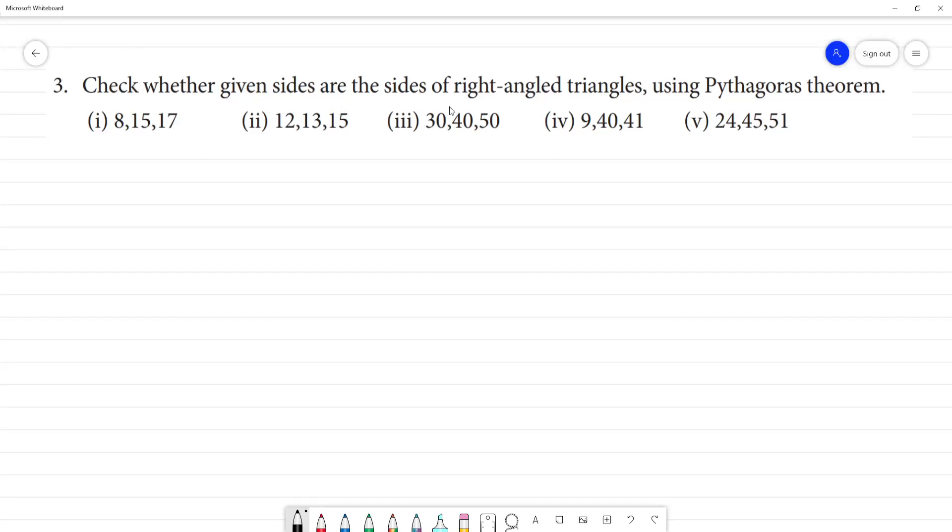Check whether the given sides are the sides of a right-angle triangle using Pythagoras theorem. If we look at a right-angle triangle, this is the hypotenuse. Hypotenuse is the greatest side of the right-angle triangle. This is altitude or one leg side, this is base, this is perpendicular, this is base.